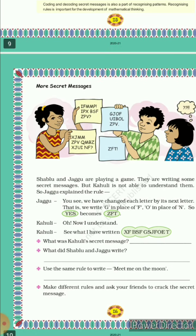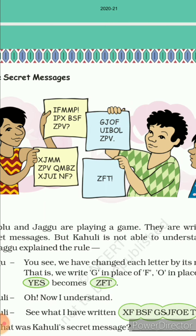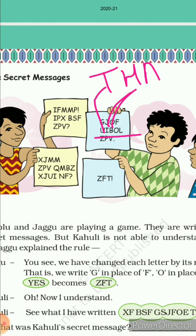Next message ko agar hum check karein: G Z I O F — Z aapka replacement hai Y ka, I ki jagah H, O ki jagah N, F ki jagah E. So aapka first word ban gaya hai F I N E. Next is U I B O L — U se pehle T, I se pehle H, B se pehle A, O se pehle N, and L se pehle K. So that is T H A N K.